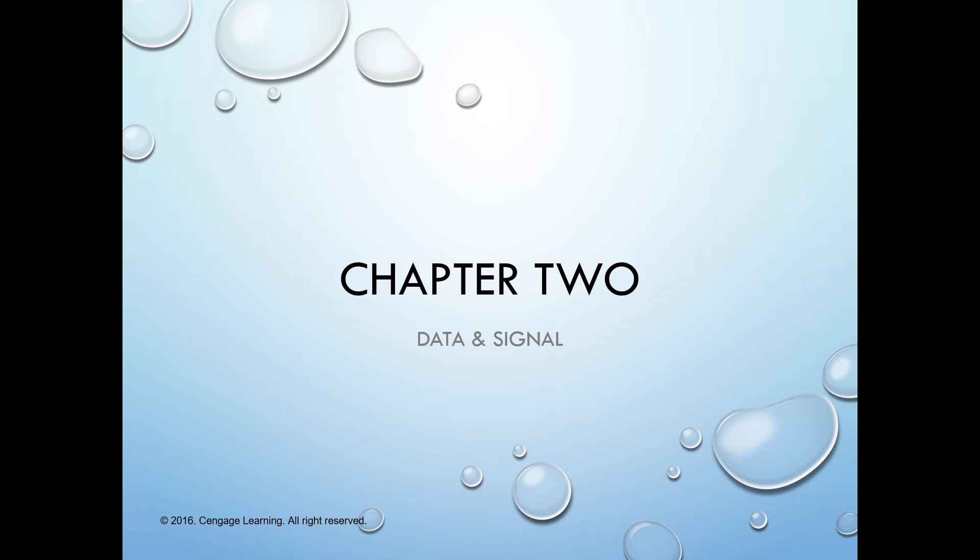In this chapter we are going to go over two important concepts in data communications: data and signal. We will first define these two types of signals and then compare their advantages and disadvantages, and finally we will discuss how each of these two signals can be converted into the other form for data communications.